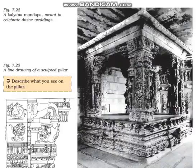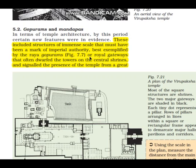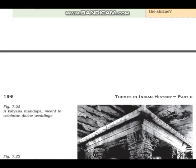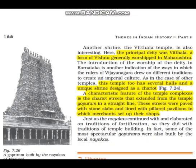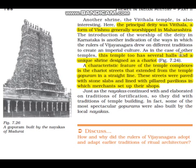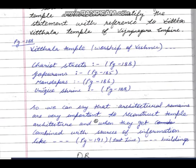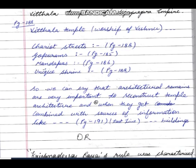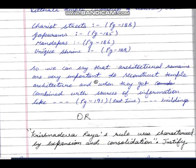Another point is 'Gopuram.' So the points are: Gopuram, and the other two points mentioned earlier. You can club the Unique Shrine and Chariot Streets into one point since this is a four-mark question with four points. Two points can be combined.